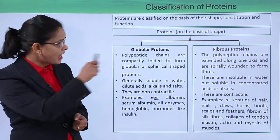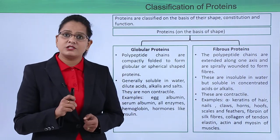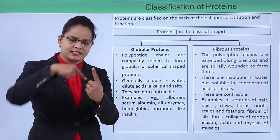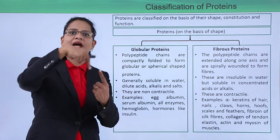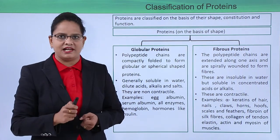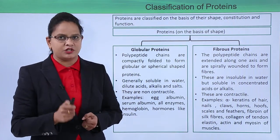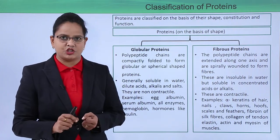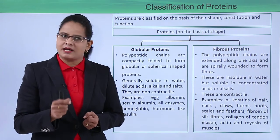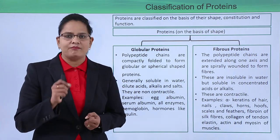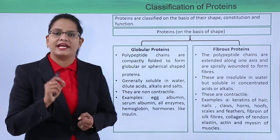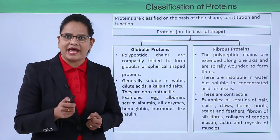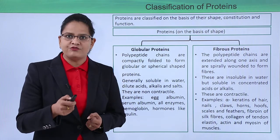Fibrous proteins, as the name suggests, are extended like long fibers. Imagine them along an axis, spirally coiled just like the alpha helix. They are contractile in nature but generally insoluble — though in some acids they might dissolve. Examples of fibrous proteins include alpha-keratin, which is found in hair, claws, hooves, nails, and the feathers of birds.